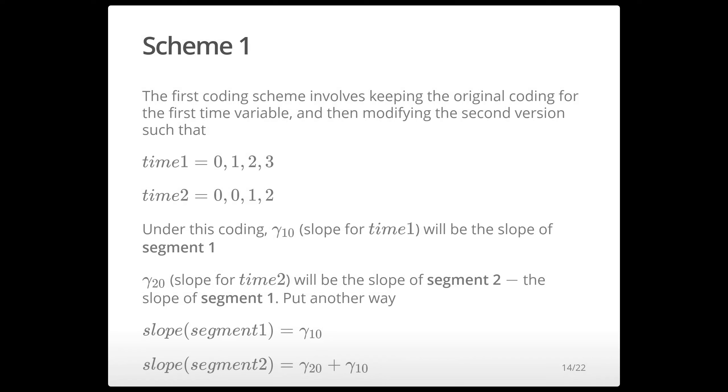So the first is to keep the original time variable as it is 0, 1, 2, 3 and then we create a new time variable that is coded 0, 0, 1, 2.